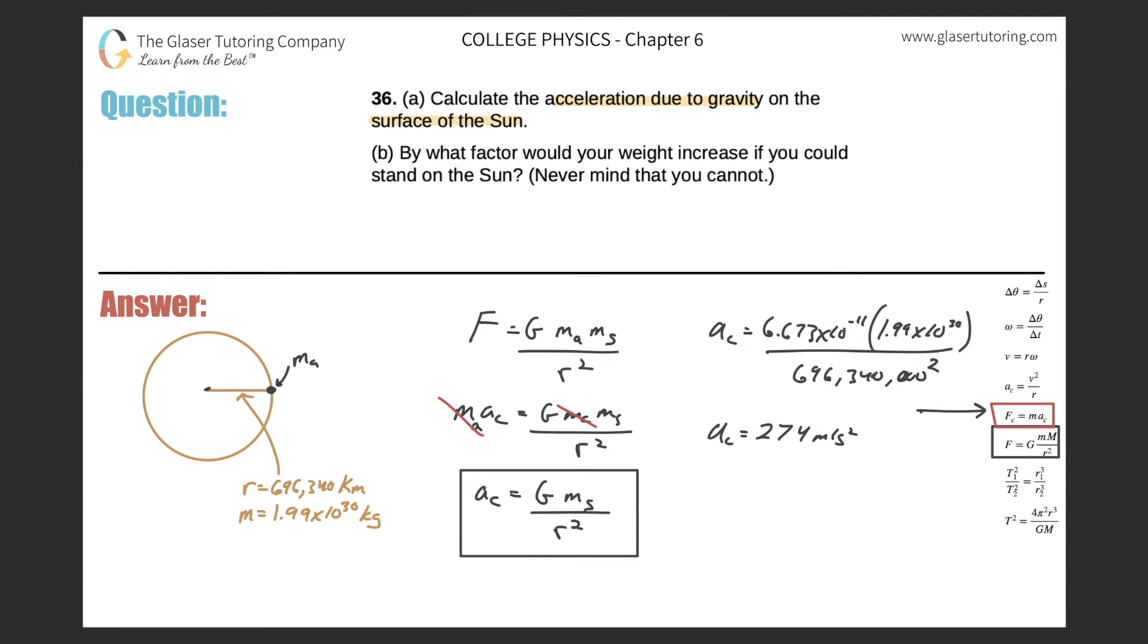It's a pretty large acceleration. That would be the acceleration due to gravity of the sun on the surface of the sun. Let's take a look now at letter B. This was all letter A. Let's look at letter B. By what factor would your weight increase if you could stand on the sun and don't worry if you cannot? Let's figure it out anyway.